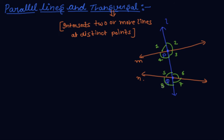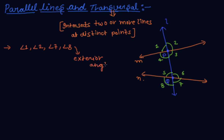In this video I will name these different types of angles. Angle 1, angle 2, angle 7 and angle 8 are called exterior angles.